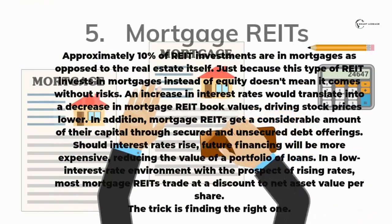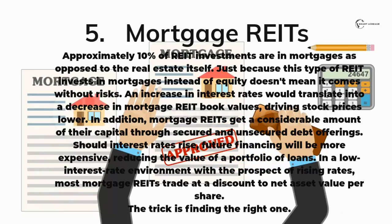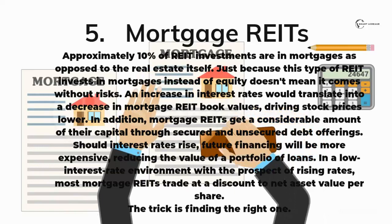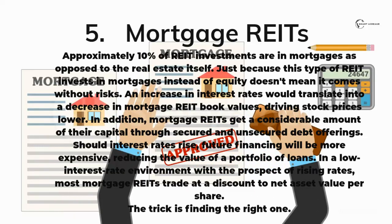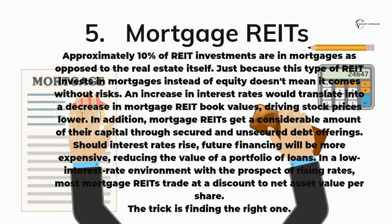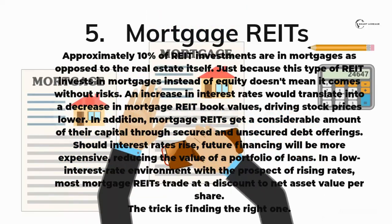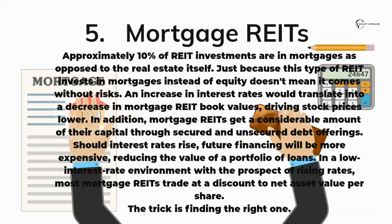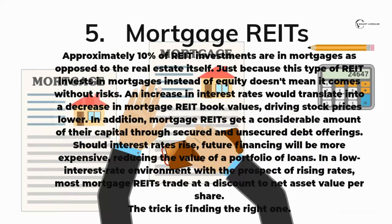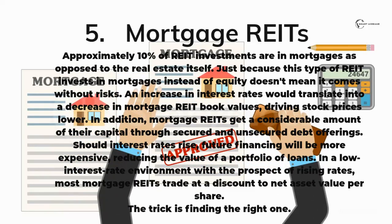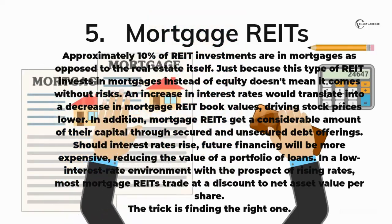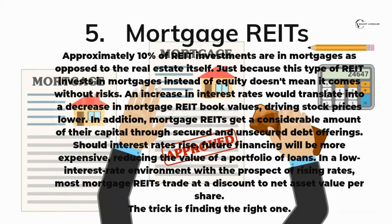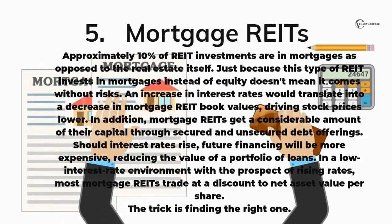Number 5: Mortgage Rights. Approximately 10% of right investments are in mortgages as opposed to the real estate itself. Just because this type of right invests in mortgages instead of equity doesn't mean it comes without risks. An increase in interest rates would translate into a decrease in mortgage right book values, driving stock prices lower. In addition, mortgage rights get a considerable amount of their capital through secured and unsecured debt offerings. Should interest rates rise, future financing will be more expensive, reducing the value of a portfolio of loans. In a low interest rate environment with the prospect of rising rates, most mortgage rights trade at a discount in net asset value per share. The trick is finding the right one.